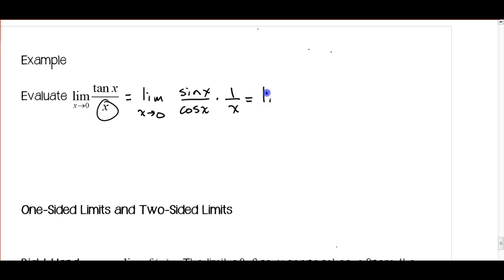And then I'm going to rearrange a little bit, so I've got the limit as x approaches zero of sine x over x times, I'm going to use my product property of limits, the limit as x approaches zero of one over cosine x. So just kind of rearranging.